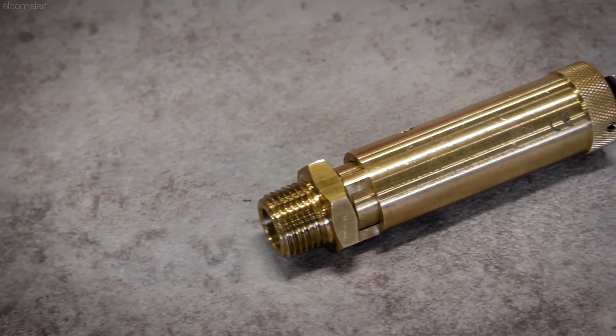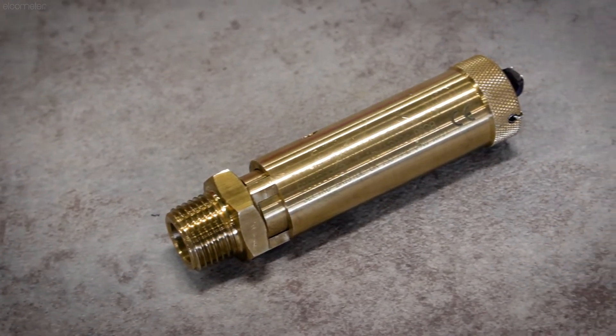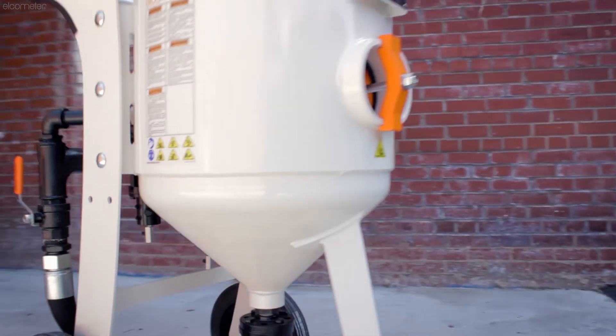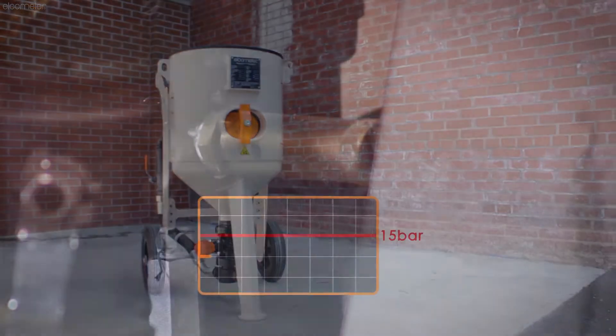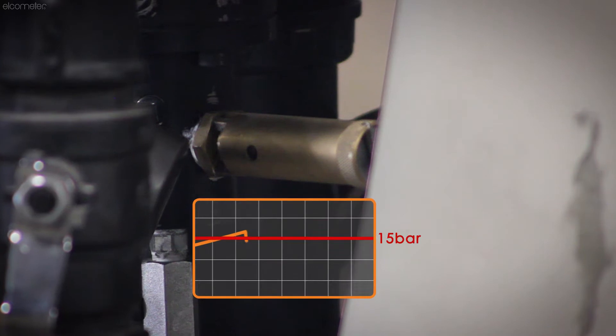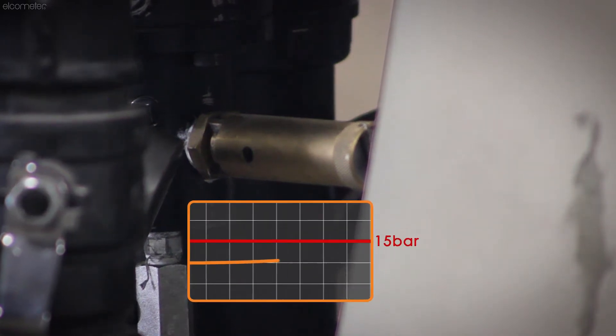That's why global safety standards require that a pressure relief valve should be incorporated somewhere within your blast system. Pressure relief valves are designed to open when the operating pressure exceeds the maximum working pressure of the blast machine.